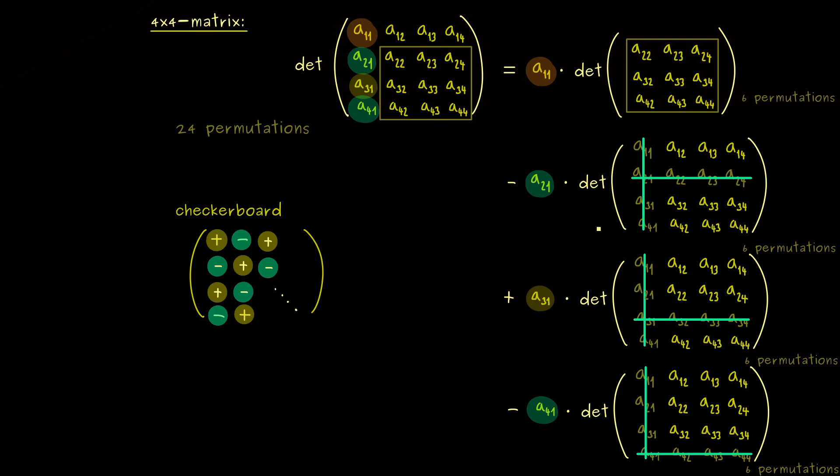Of course, in an explicit calculation, you would use the row or the column with the most zeros. Simply because, a zero would omit a whole part here. Indeed, we have learned now, that we can calculate the determinant of a 4×4 matrix easily, without forgetting any permutation. In fact, the only thing you need to remember, is this checkerboard pattern, but you can easily generate that as well.